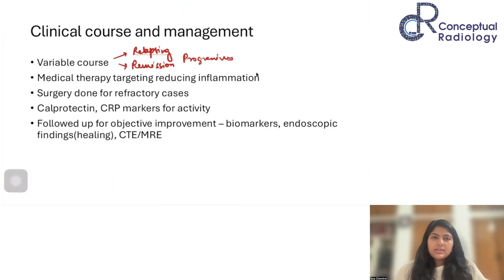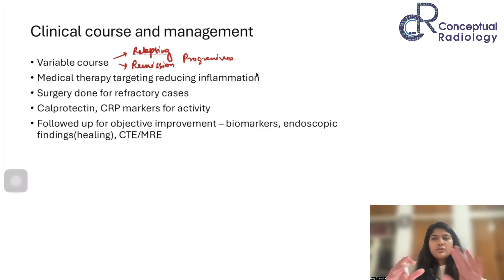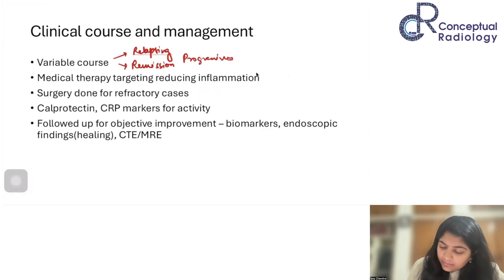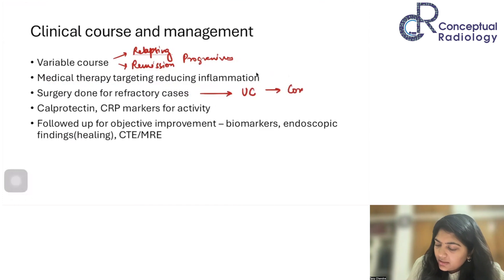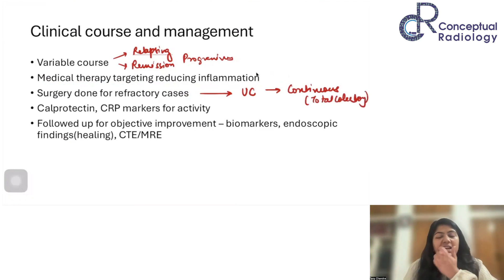IBD has a variable course — it can be relapsing, it can have remissions, or it can be progressive. Whenever we are treating patients of IBD we just want to reduce the inflammation; there is no cure, we are just trying to curtail the inflammation. For refractory cases a surgery can be done. Surgery makes more sense for UC patients because they have a continuous kind of disease and can undergo a total colectomy, but that is a very refractory phase and we really don't want to do it before that.